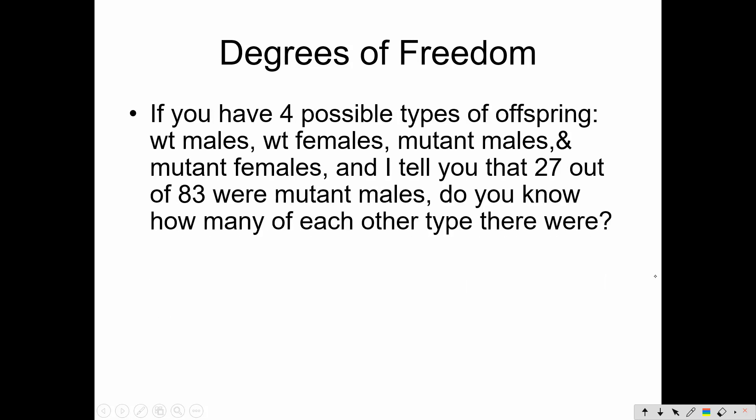But, for example, if you have four possible types of offspring, say wild-type males, wild-type females, mutant males, mutant females, and I tell you that 27 out of 83 were mutant males, do you know how many of each of the other types there were? Not really. You really have three more possible numbers that could go there. Three degrees of freedom. So the degrees of freedom is really the number of possible outcomes minus one. It's always the number of possible outcomes minus one.